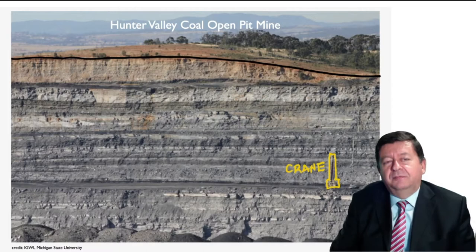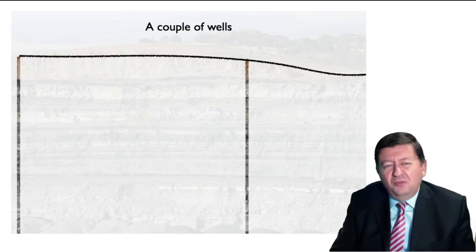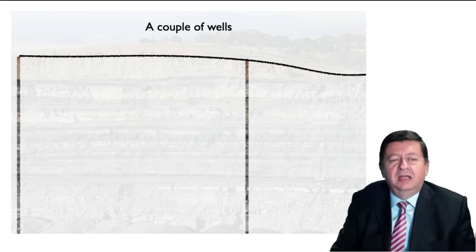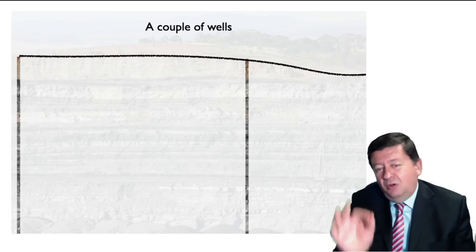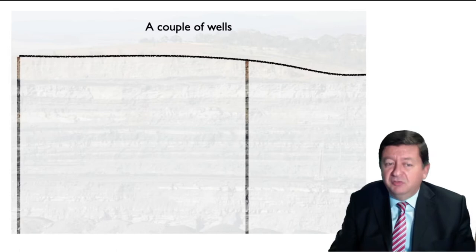But in general we don't have access to this information — we don't have access to this picture of our aquifer. The most we may have is just information about the distribution of the different materials at a couple of locations, a few wells in the aquifer. And we are going to be seeing only what you see in these small slits, and from that we should be able to reconstruct the heterogeneity that is beneath the surface.